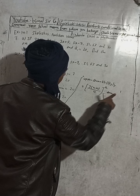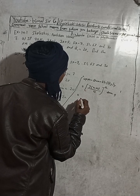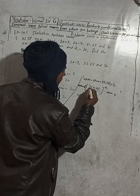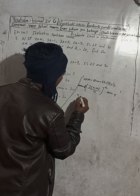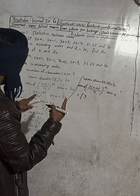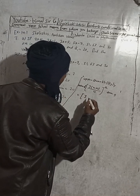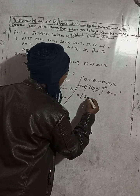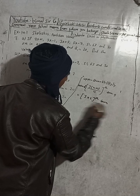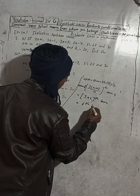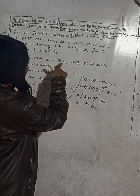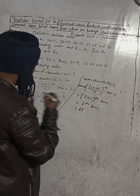So Q3 equals the 3(n+1)/4 th term. We know that (n+1)/4 equals 2, so Q3 equals 3 times 2, which is the 6th term. Counting in the list: 1st, 2nd, 3rd, 4th, 5th, 6th — the 6th term is 63. So Q3 equals 63.